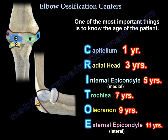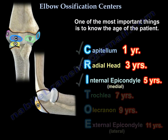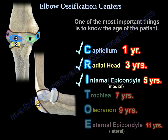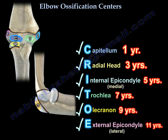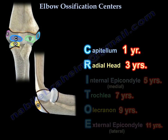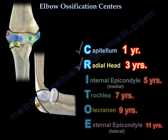One of the most important things is to know the age of the patient. If the age is 5, these are the ossification centers expected to be seen. If the age is 11, I expect to see this ossification center. If the age is 3, I expect this ossification center to be seen on the X-ray.